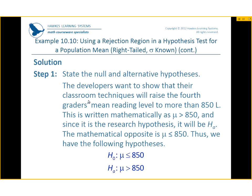First thing: state the null and alternative hypothesis. The developers wanted to show that their classroom techniques would raise the fourth grade mean reading levels to more than 850L. So this is written mathematically as the mean is greater than 850. And since it's the research hypothesis, it's going to be our alternative. The mathematical opposite of the mean greater than 850 is the mean less than or equal to 850. Thus, our null is the mean is less than or equal to 850, and our alternative is the mean is greater than 850.